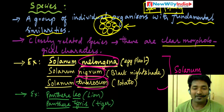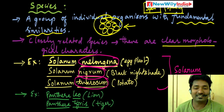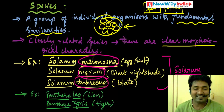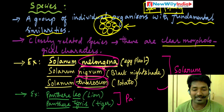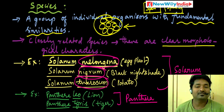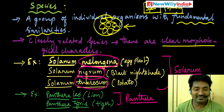Eggplant, Black Nightshade, and Potato — these three belong to the same genus but are three different species. In the same way, Panthera leo (Lion) and Panthera tigris (Tiger) are two different species but belong to the same genus Panthera.